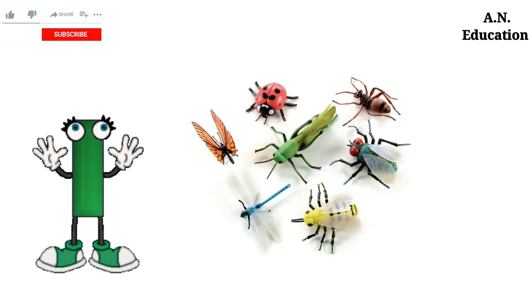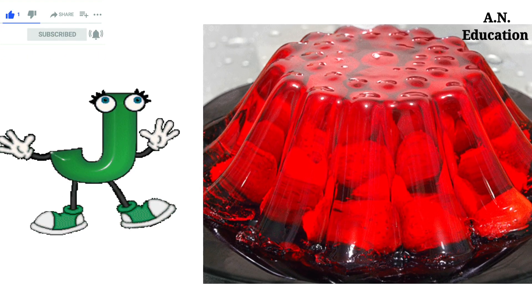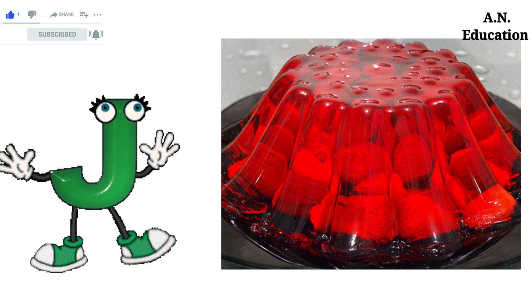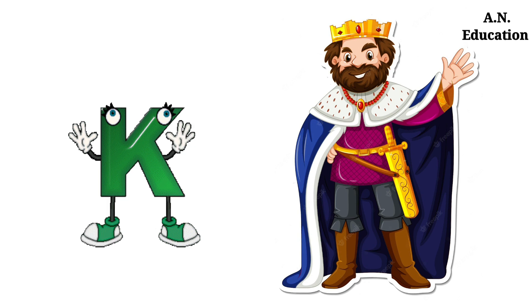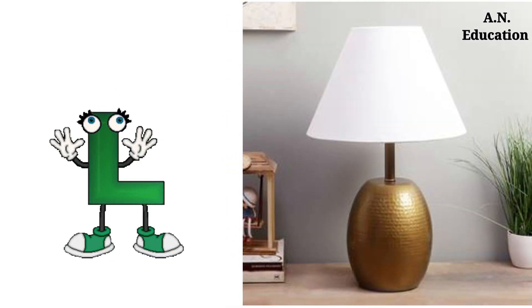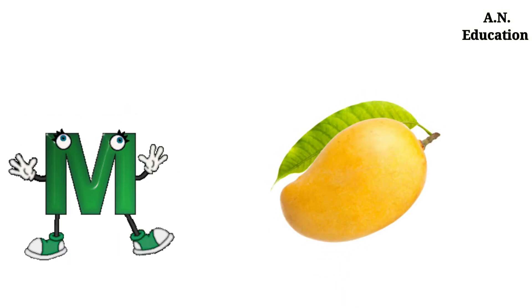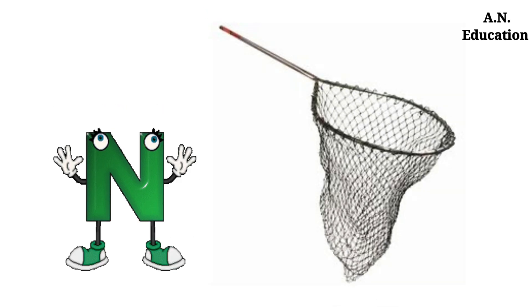I for insects, J for jelly, K for cane, L for lamp, M for mango, N for net.